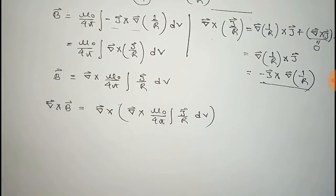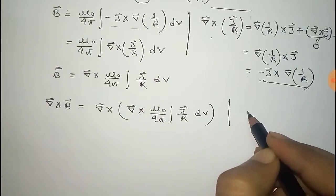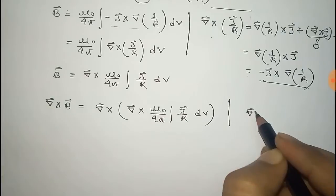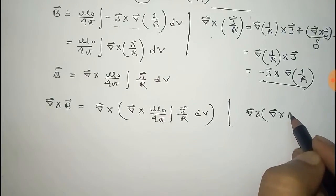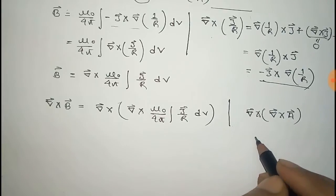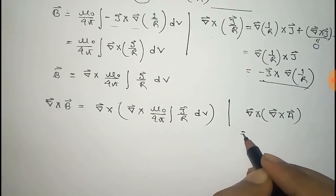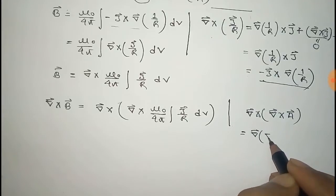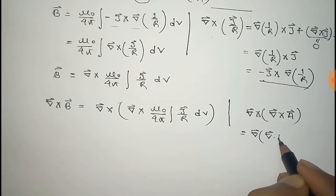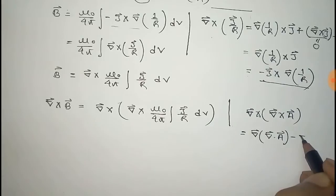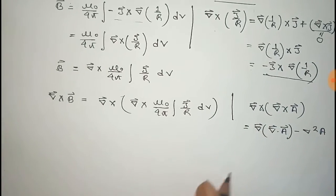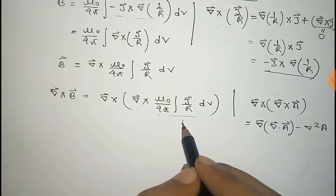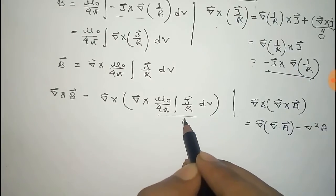Here we use the formula for curl of curl of a vector A: curl(curl A) equals nabla of divergence of A minus nabla-squared A. This is the formula and we use it here, taking this as the vector A.